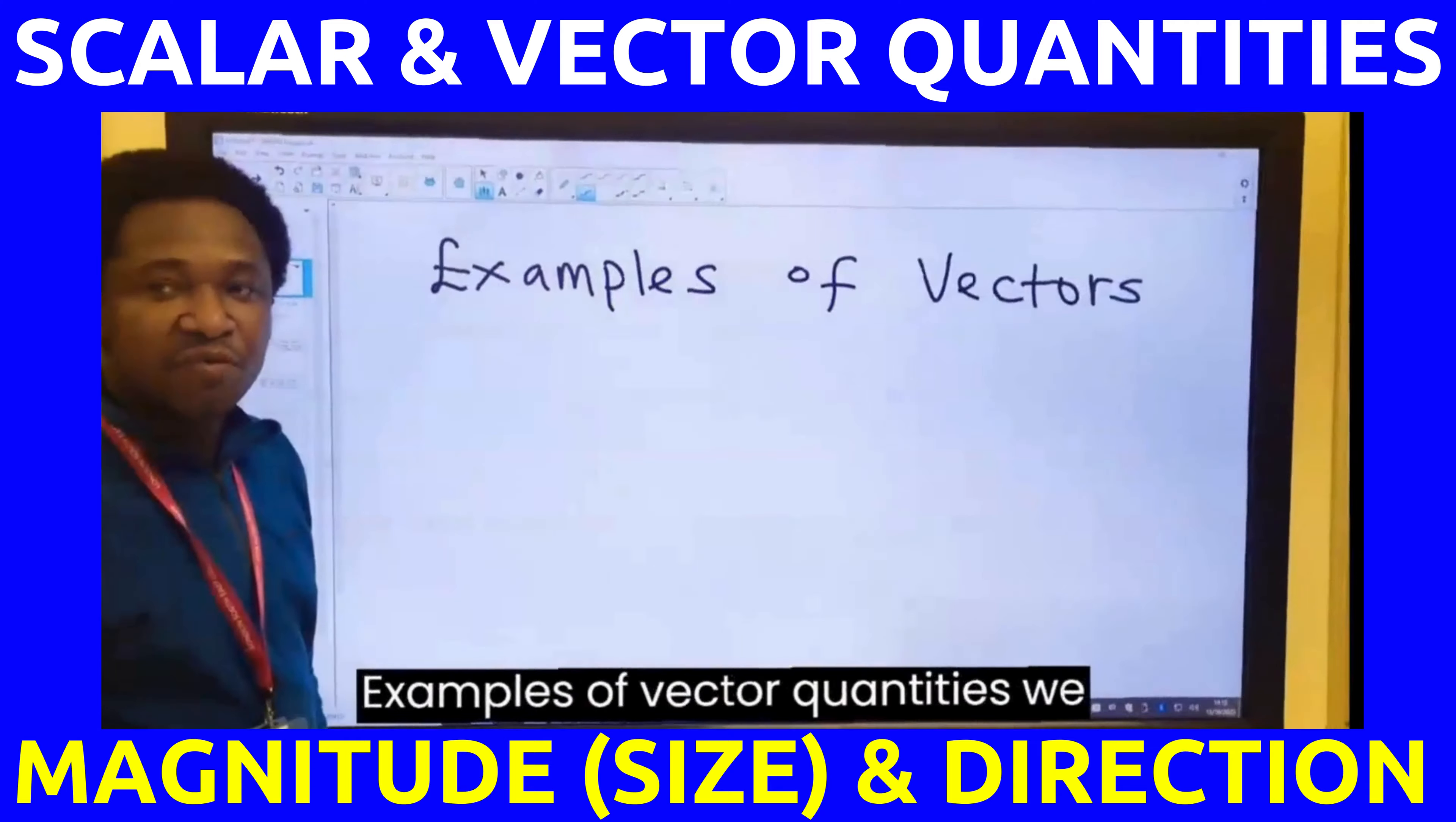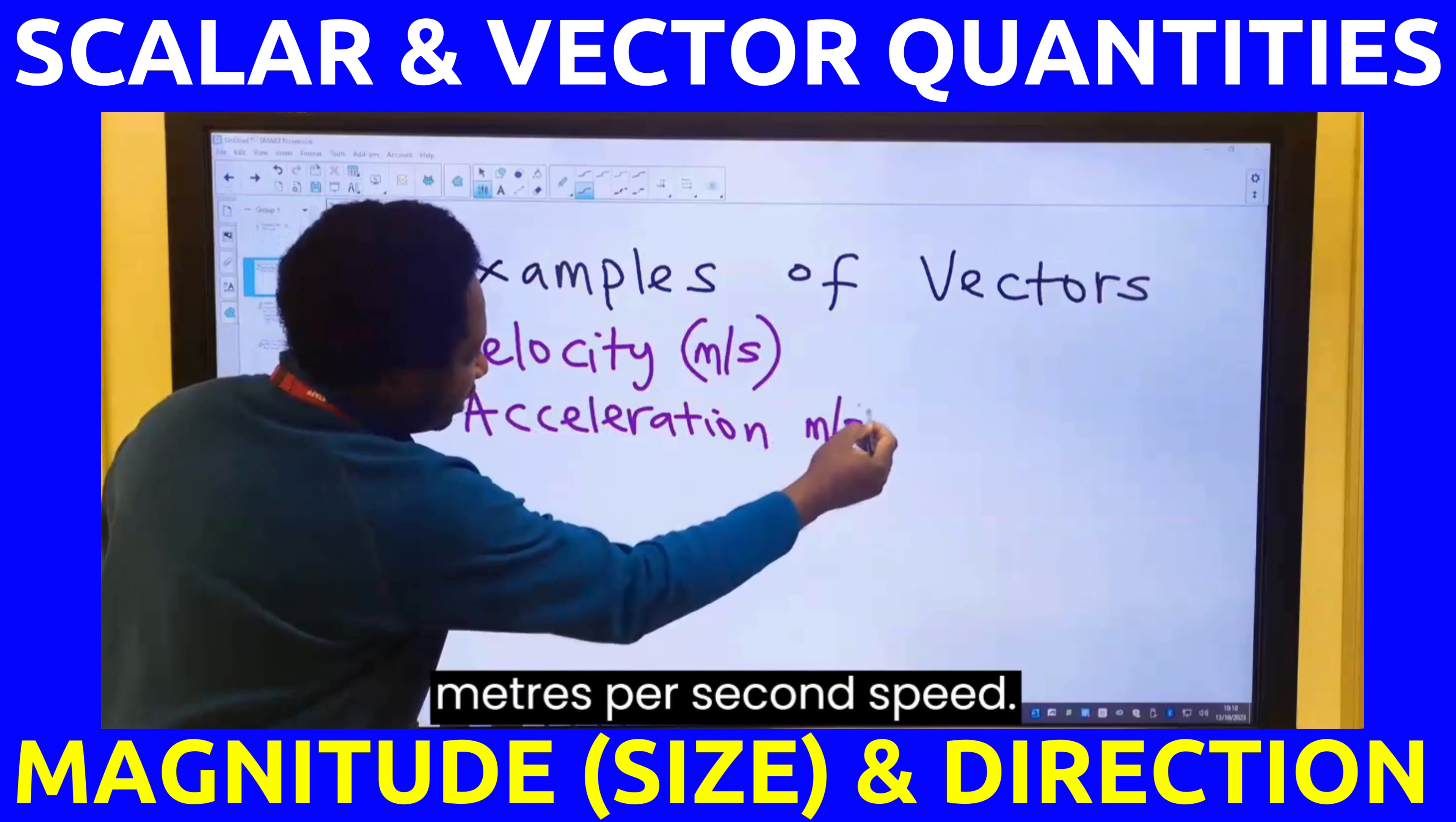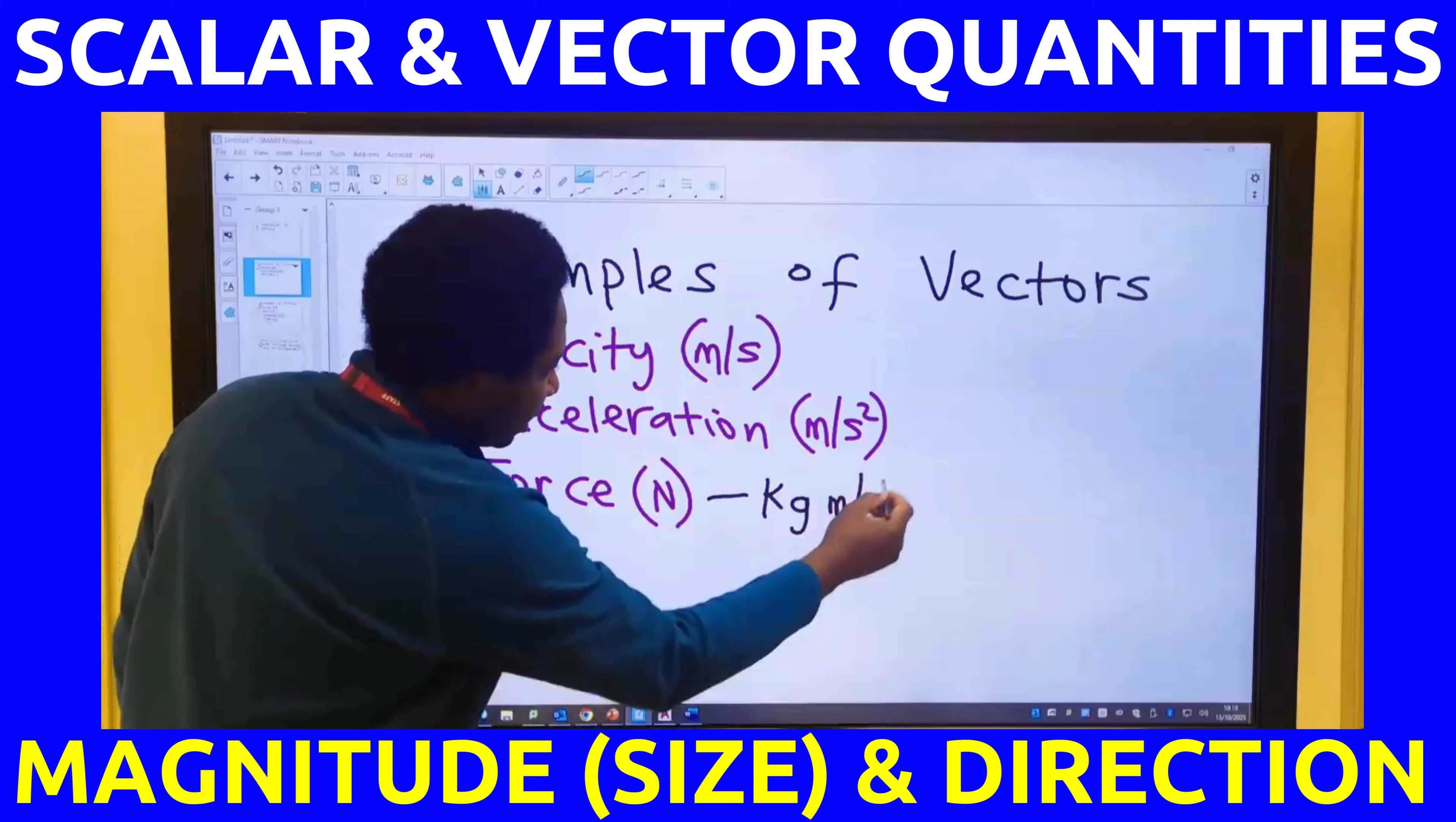Examples of vector quantities. We have velocity, which is in meter per second. We have acceleration, which is in meters per second squared. We have force, which is in newton. This newton is kilogram meters per second squared.